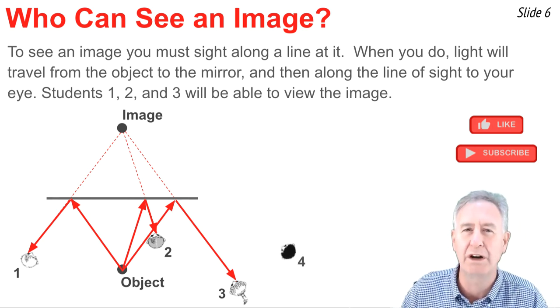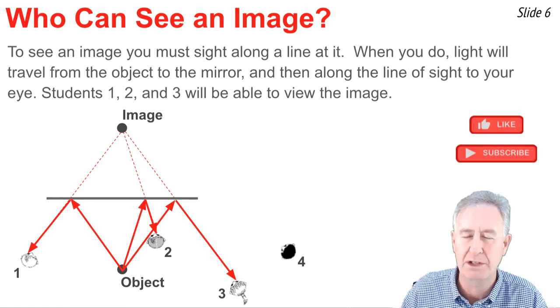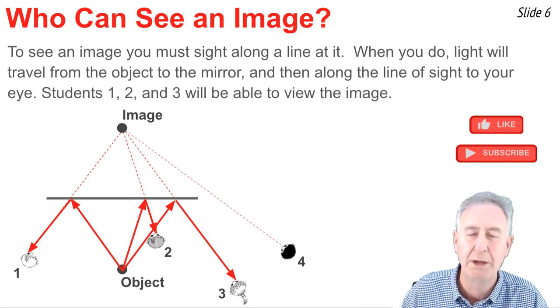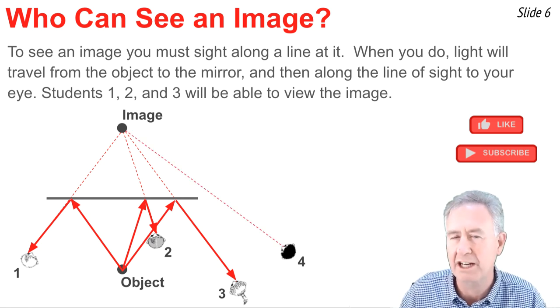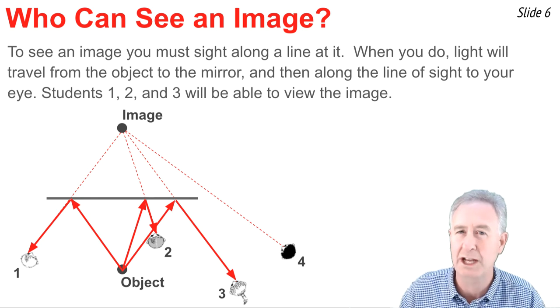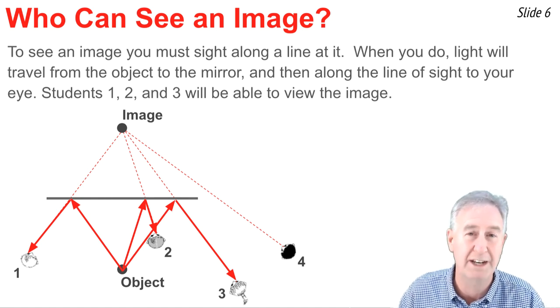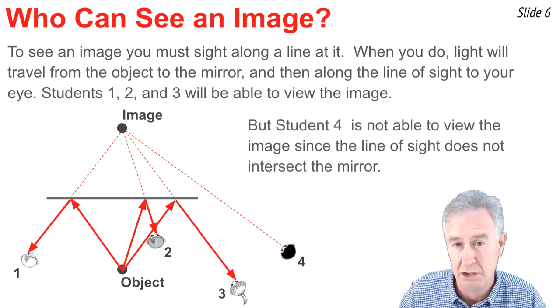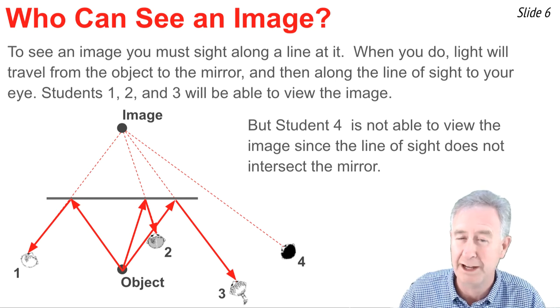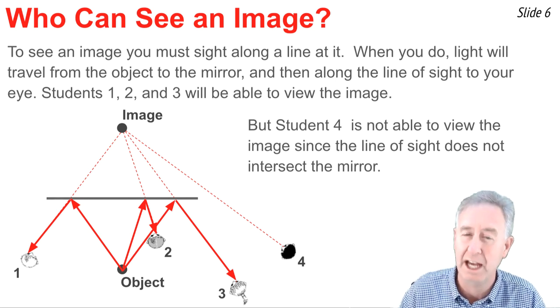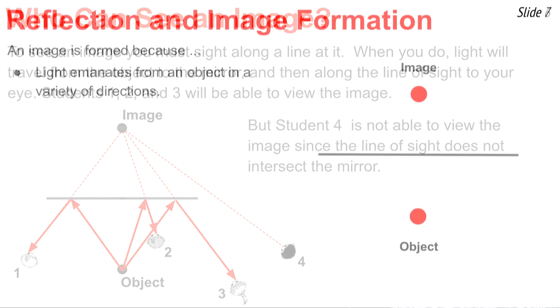Now what about student four? Can student four see the image? And the answer is no. Because when student four aligns the line of sight up with the image location, it doesn't intersect with the mirror. The mirror's not wide enough for student four to see the image. Light from the object doesn't reflect off the mirror and come to the eye of student four.